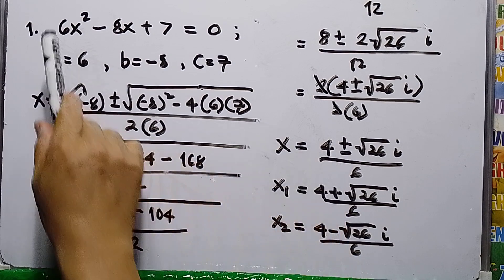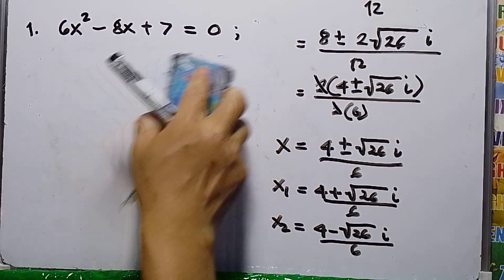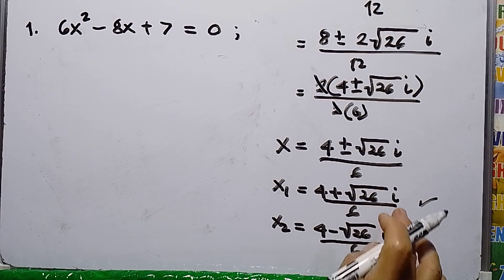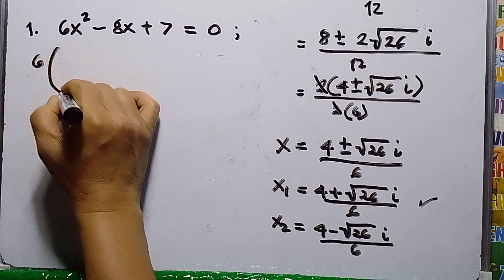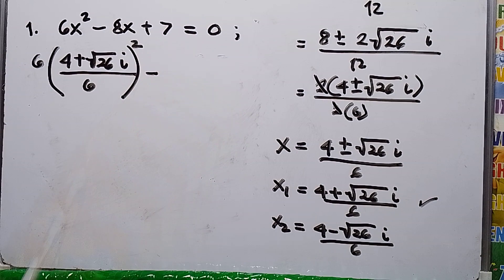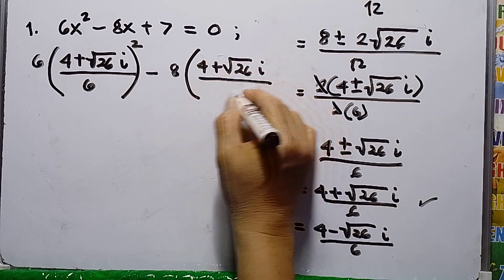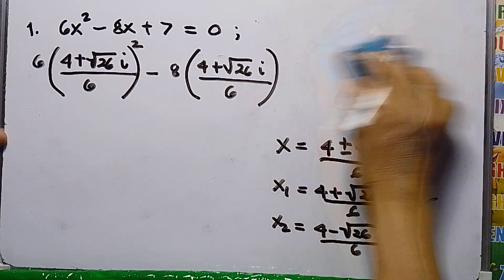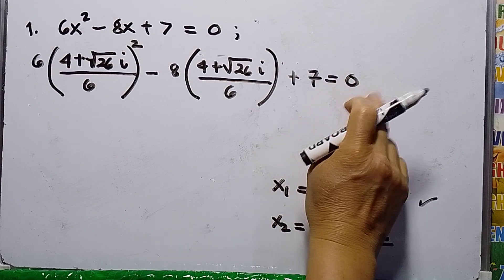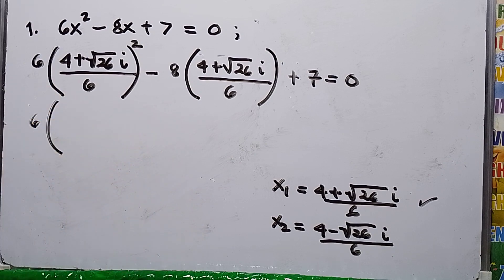Now let us check by substituting x1 and x2 back into the original equation to verify the left side equals zero, since the right side is zero. Using x1 equals 4 plus square root of 26 i over 6, we substitute into 6x squared minus 8x plus 7 equals 0. So we have 6 times the quantity 4 plus square root of 26 i over 6, squared, and so this gives us a factor of 36 in the denominator.